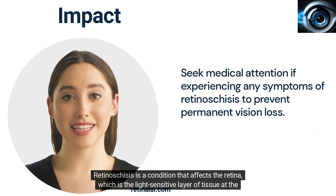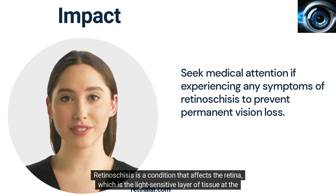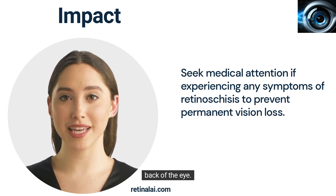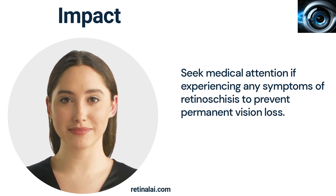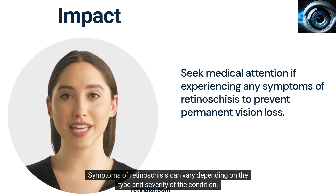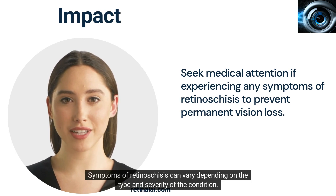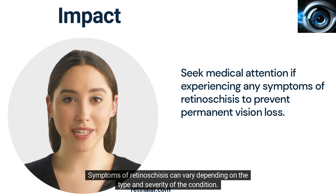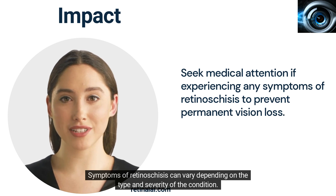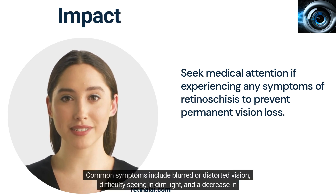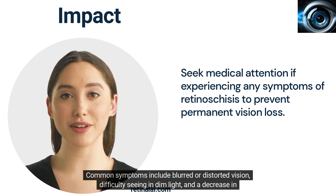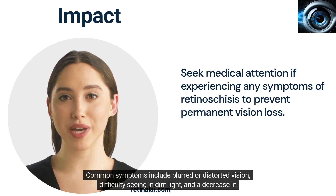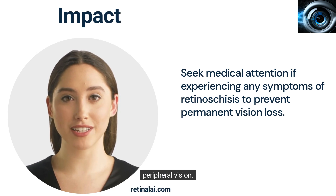Retinosteces is a condition that affects the retina, which is the light-sensitive layer of tissue at the back of the eye. Symptoms of Retinosteces can vary depending on the type and severity of the condition. Common symptoms include blurred or distorted vision, difficulty seeing in dim light, and a decrease in peripheral vision.